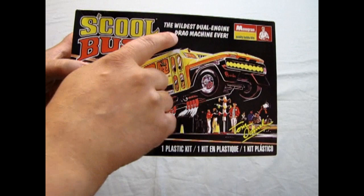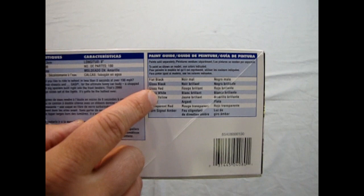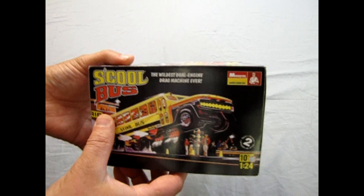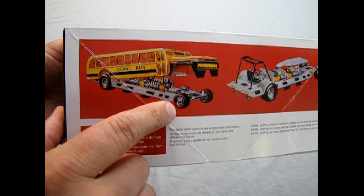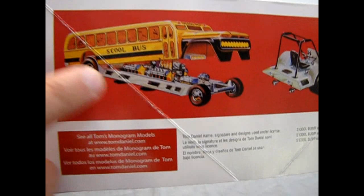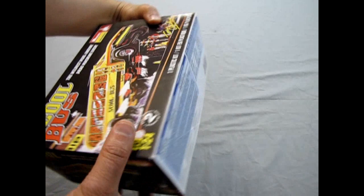As we look at the side of the box here, we get a nice write-up as to the history on the school bus as well as the paint call-out sheet, and of course this vintage retro box art which is always cool. We also have a look at what it looks like once the bus flips up - this is one huge funny car with two dual diesel motors in it propelling it along.